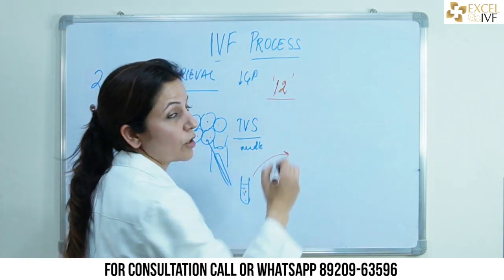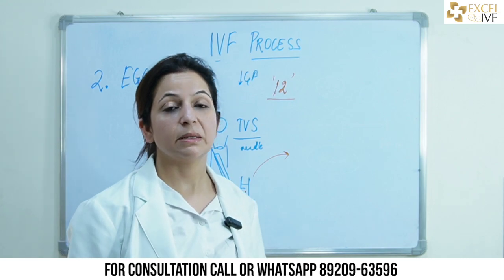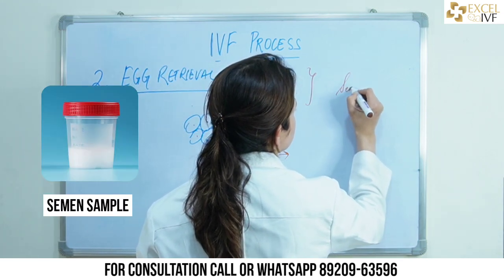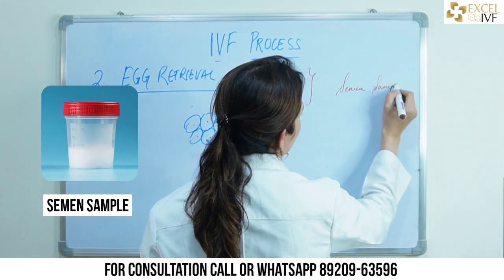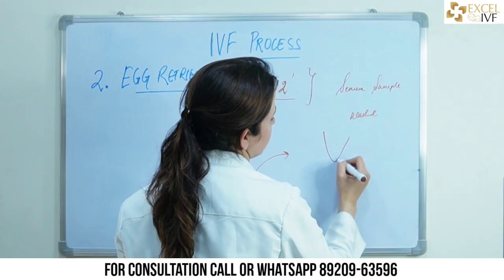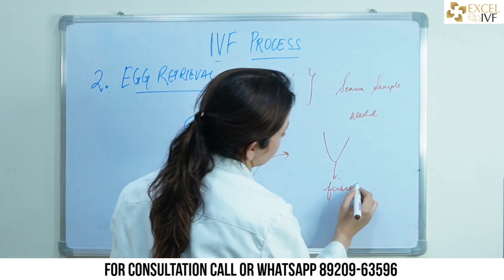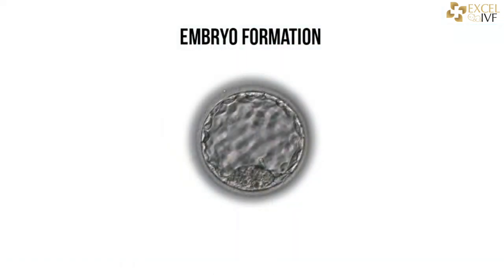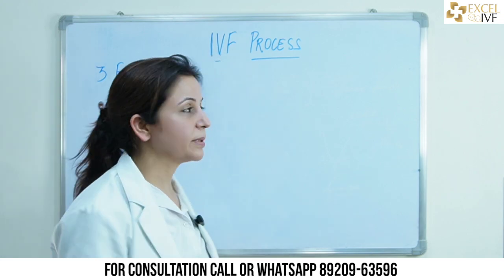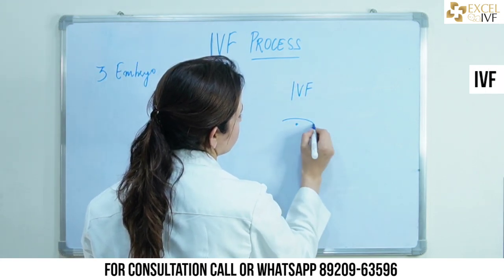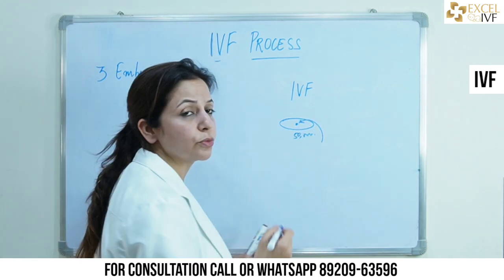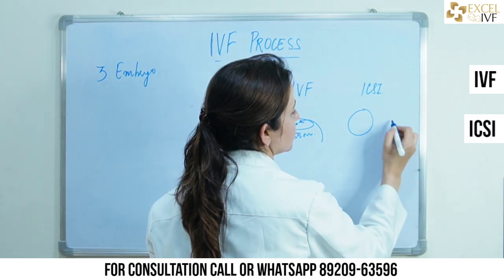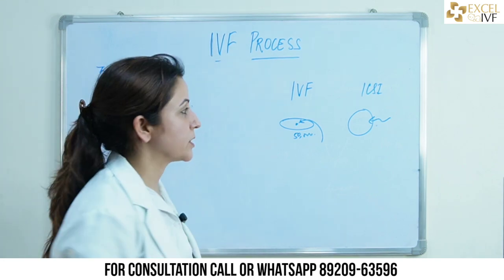Let's presume we started with 13 follicles, all grew well, one was empty, giving us 12 eggs on the day of retrieval. Not all eggs may be mature — some may be in a mature state, some immature — and the embryologist assesses this. It is also on this day that the partner is asked for a semen sample, which is washed and prepared for fusion. This brings us to the third step: embryo formation. Embryo formation can happen in two ways — conventional IVF, where one egg is surrounded by 50,000 washed sperms in a culture dish, or ICSI, where the embryologist injects a single sperm directly into the egg under a microscope.